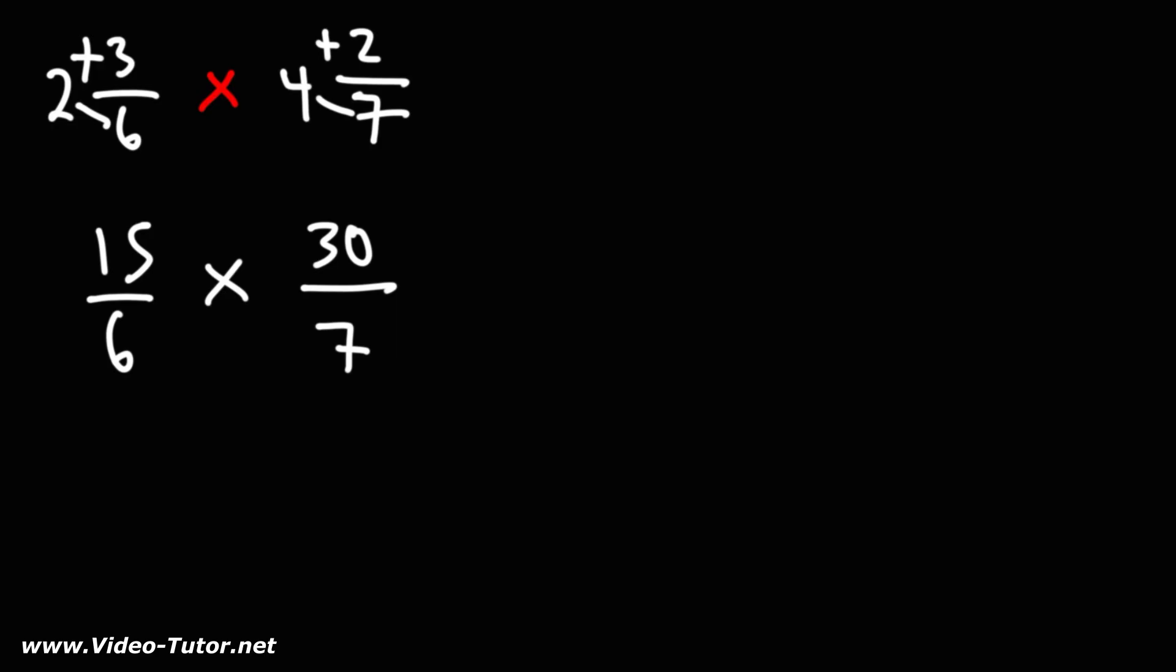Now, since we're dealing with some relatively large numbers, we want to cancel before we multiply. 15, we can write that as 5 times 3. 6, we can write that as 3 times 2. 7, I'm just going to leave that as 7 times 1. 30, we can write that as 2 times 15.